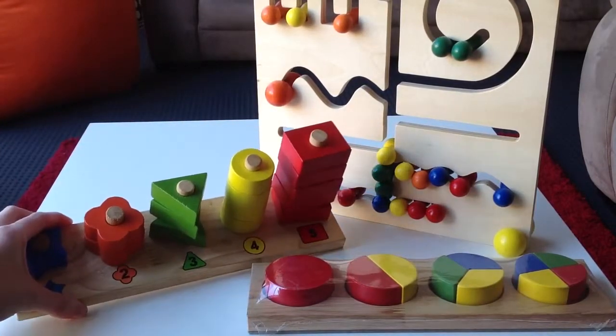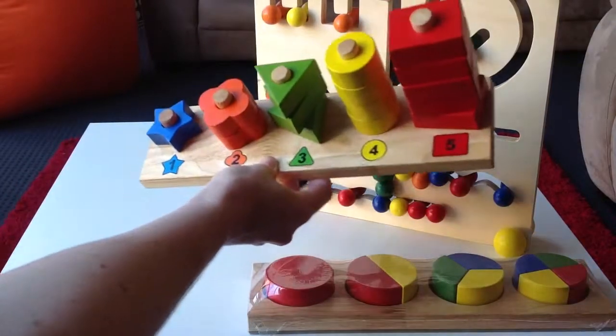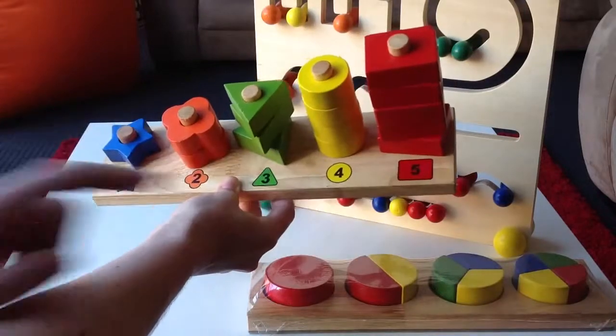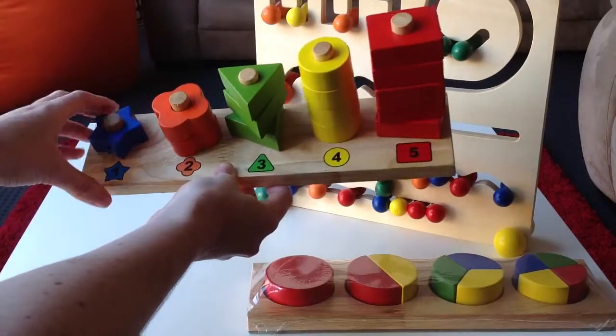So if you can see, maybe put it that way with the light, you can see on each one here that you've got the numbers. So you're matching numbers, colours and shapes as well as counting.